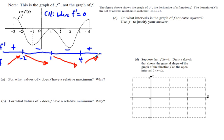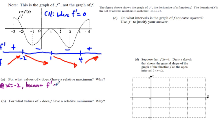Now we have everything we need to answer parts a and b. For part a, for what values of x does f have a relative maximum? We can see that the arrow going up changes to arrow going down at x equals negative 2. So our relative maximum is at x equals negative 2. Why? Because f' of x changes from positive to negative.